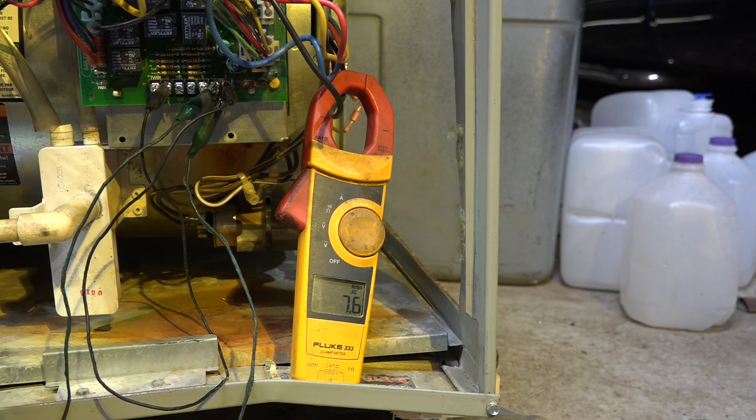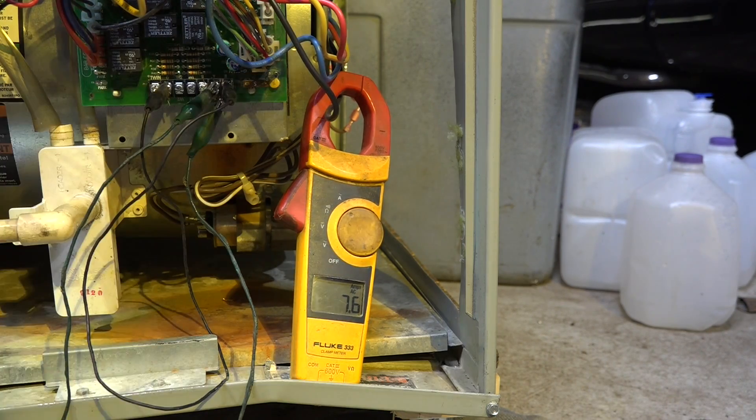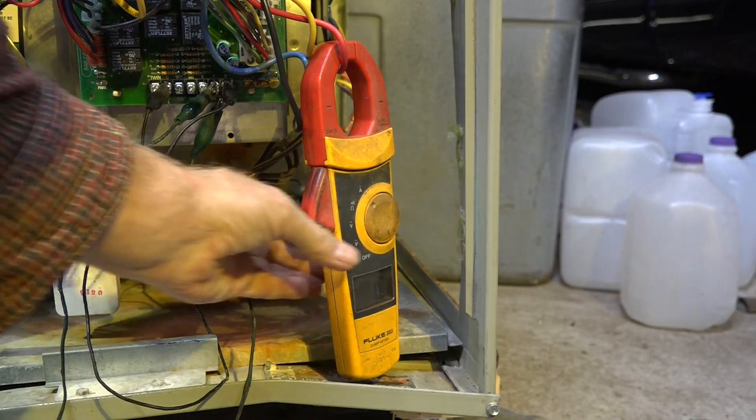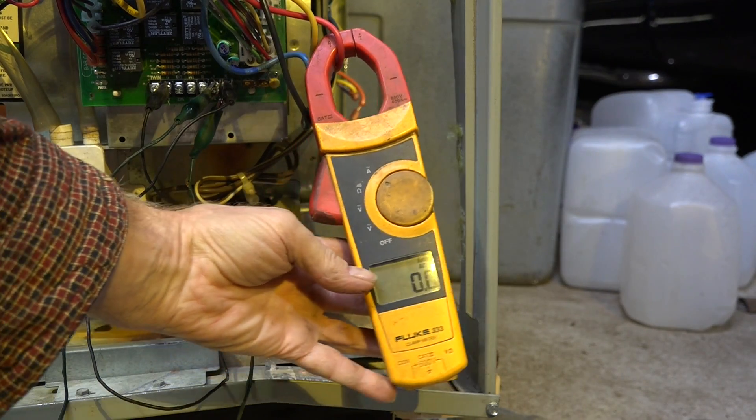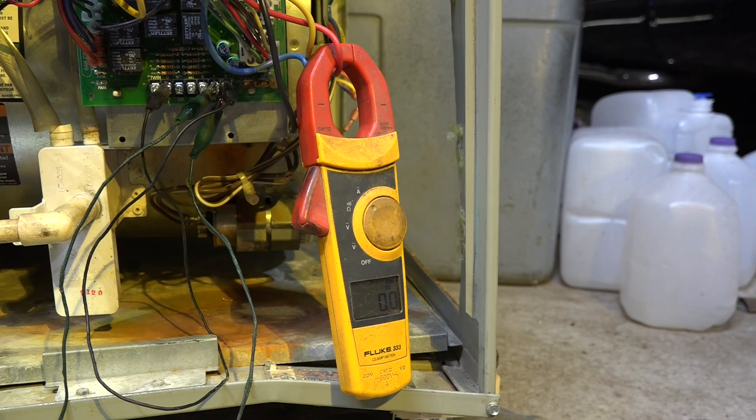Okay, you can see I've clamped the black wire, which is high speed, and of course we're showing amp draw. If I go to the red wire, you can see I get no amp draw at all. That's how the integrated furnace control deals with the fan being on continuously.